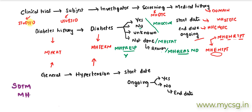To summarize: STUDYID, USUBJID, MHDTC, DOMAIN, MHCAT, MHTERM, MHPRESP (whether pre-specified), MHOCCUR (whether it occurred), MHSTAT (whether the question was asked), MHREASND (reason not done), MHSTDTC (start date), MHENDTC (end date), and the pair MHENRTPT and MHENTPT for ongoing conditions. This is how you can easily remember the content and variables in SDTM MH domain. Thank you for watching, keep learning.